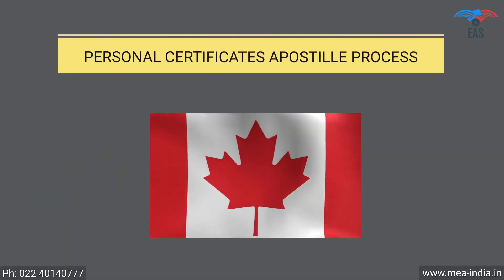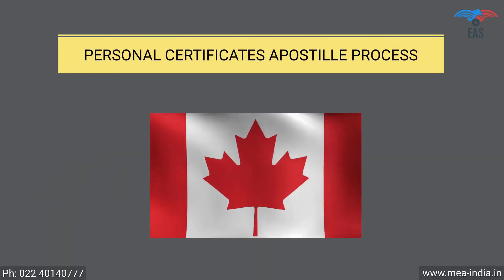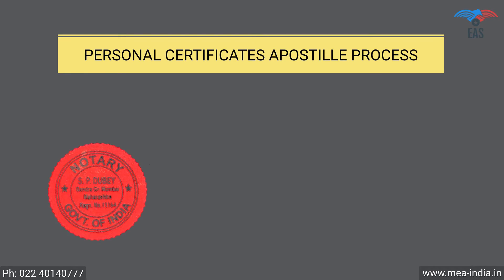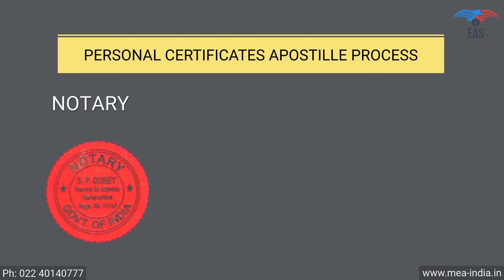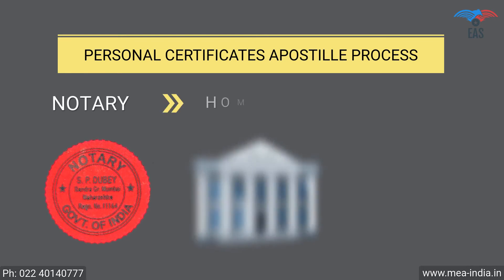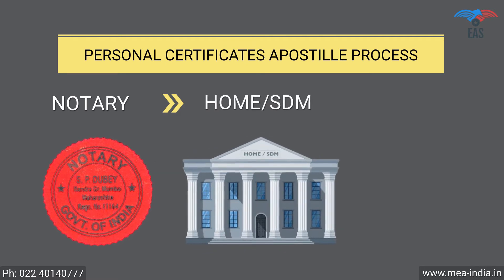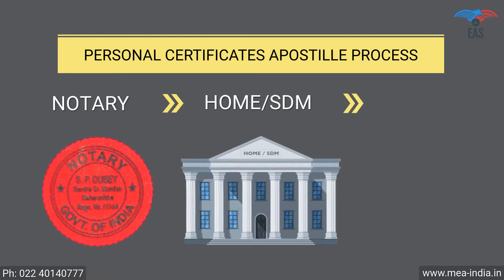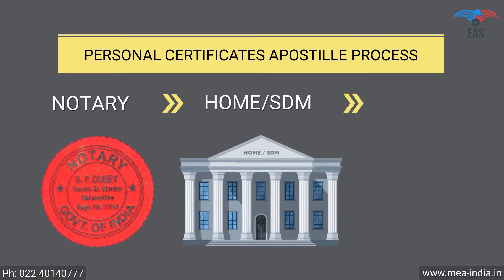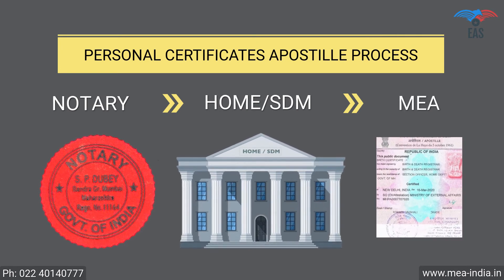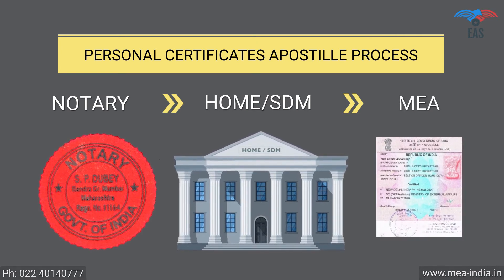Personal Documents Apostille Procedure for Canada. Step 1: Notary Attestation. Step 2: Attestation from the Home Department or SDM. Step 3: Final Attestation from the Ministry of External Affairs.